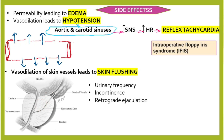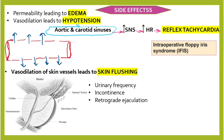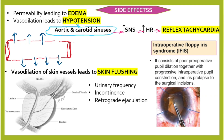Another side effect due to dilation of the ejaculatory pathway is retrograde ejaculation. The last side effect to mention is intraoperative floppy iris syndrome (IFIS). This syndrome consists of poor preoperative pupil dilation, together with progressive intraoperative pupil constriction and iris prolapse through the surgical incision. The most common drug associated with IFIS is tamsulosin.